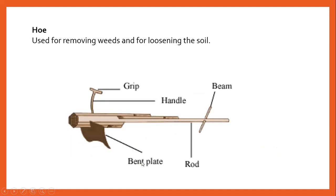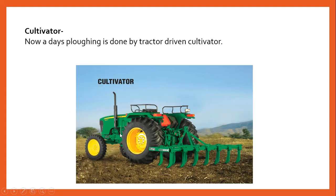The next tool is the hoe. It has a long rod of wood or iron, and a strong broad flat plate of iron is fixed at one end, which works like a blade. This is also pulled by an animal. The next tool is the cultivator, which is fixed on a tractor. The use of the cultivator saves labor and time.